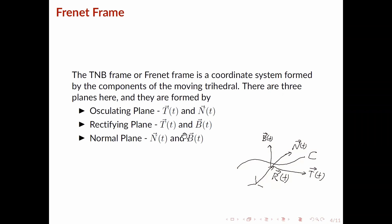Using these three vectors we can define what's called the TNB frame, or Frenet frame. This is a coordinate system formed by the components of the moving trihedral. There are three planes formed by various combinations of the three vectors we've defined. First up we have the osculating plane. This plane is spanned by the tangent vector and normal vector, so n and t both lie on this plane.